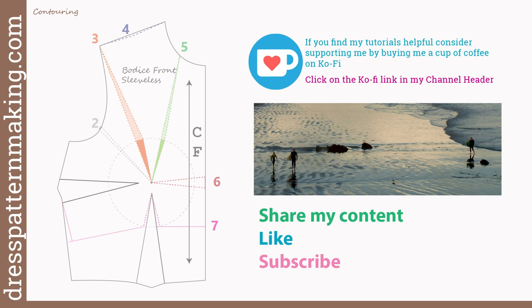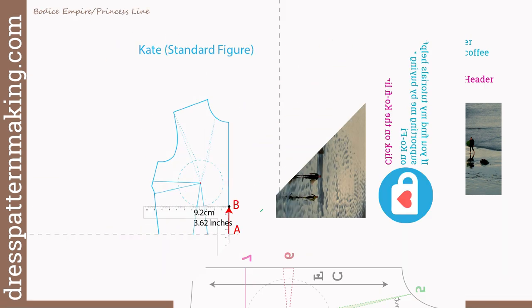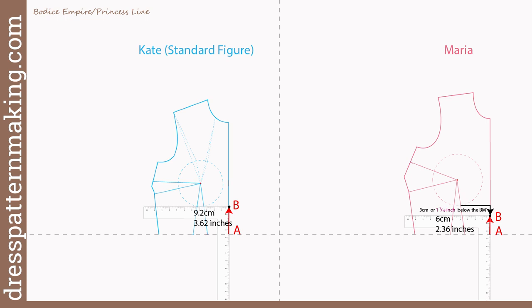Now let's start drawing the empire line. Instead of calling the left pattern 'the standard figure pattern,' I'll refer to it as Kate's pattern — Kate has a standard figure. For Kate I've placed the empire line in its usual place, just below the bust mound. I placed a ruler to touch the bust mound circle at right angles to the center front and measured up from the waist.